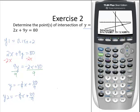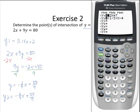Go to the calculator. Y equals screen. Clear out the old stuff. And now I will put in the new equation. Y1 is 0.15x plus 2. Y2 is, I'm going to put these fractional coefficients in parentheses, negative 2 ninths x plus 80 ninths.